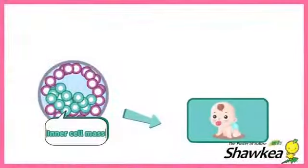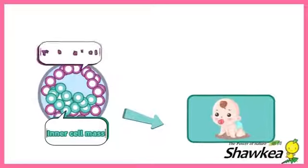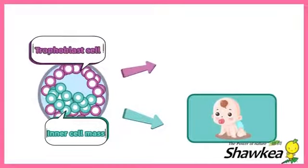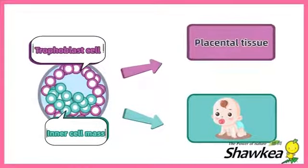During this stage, the inner cell mass will develop into the future fetus, and the outer trophoblast will develop into the placenta tissue.